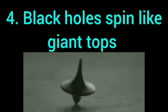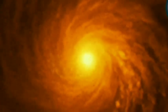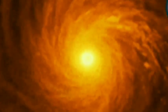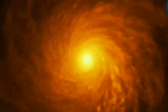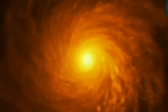Black holes spin like giant tops. Black holes spin like giant tops due to the swirl of matter around them. The faster they spin, the more they warp the fabric of space-time around them.